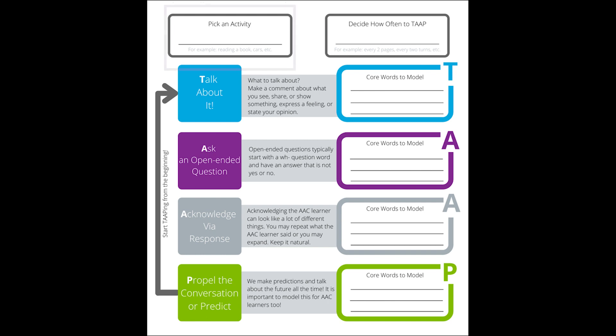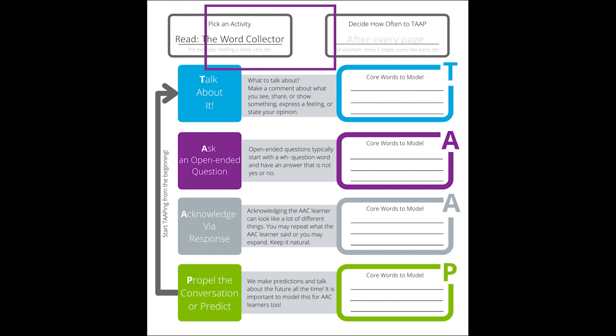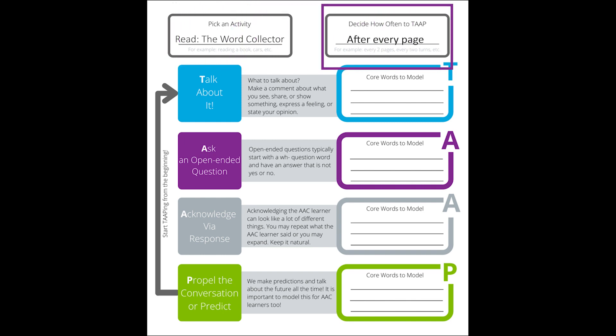The first step to tap your way through is to pick an activity. We've already done that — we're reading the book The Word Collector. Next, you decide how often you will stop and tap. For this story, we suggest tapping after every page of the book.